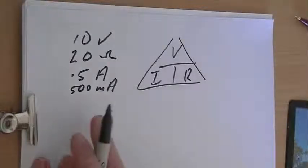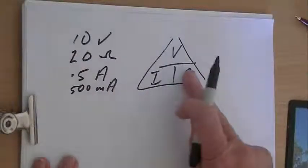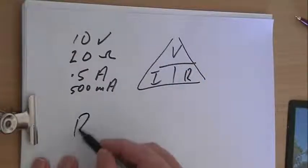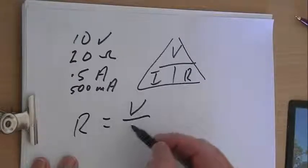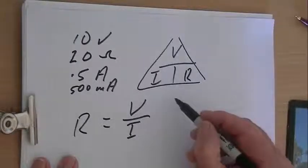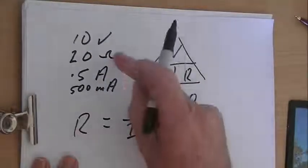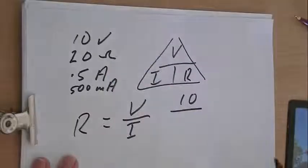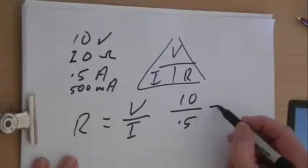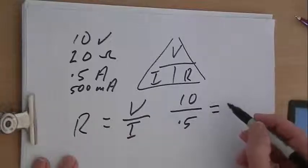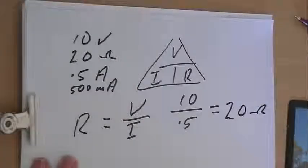So let's work out the resistance that we had. So resistance is equal to V over I, which is in this case 10 volts over half an amp, 0.5. And if we calculate that out, we will get 20 ohms, which is what we had.